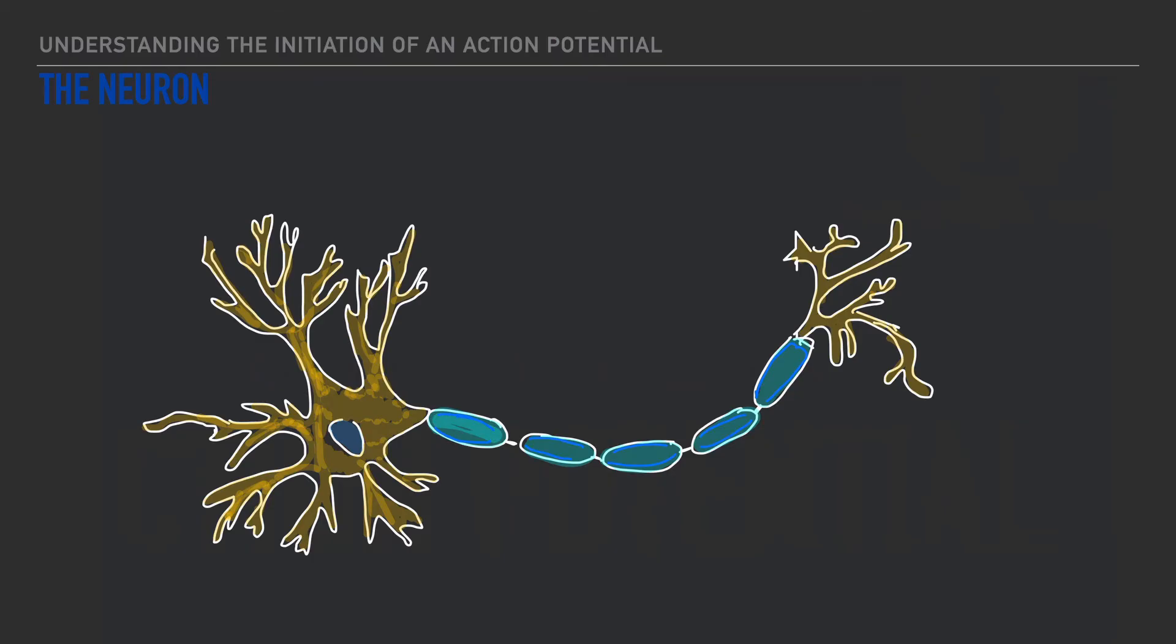But right before we get there let's take just a few moments to identify the primary components of a nerve cell which is better known as a neuron. For note-taking purposes, a neuron is the functional component that outlines how nerve conduction takes place.